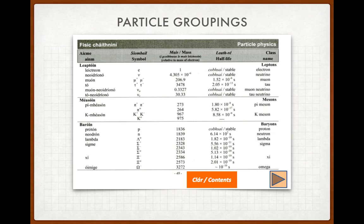These are examples of particle groupings from the log tables. There are three particle groupings in the right-hand column: leptons, mesons, and baryons. Leptons are fundamental particles — not made up of anything else. Mesons and baryons are made up of quarks. They're also organised by mass: leptons are the least massive, mesons are in the middle, and baryons are the most massive. That's on page 48, where you'll get values for half-life and mass if required in a question.